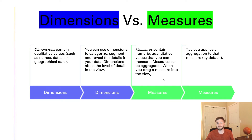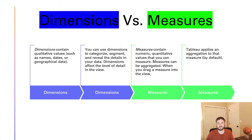Measures, on the other hand, can be added up. They're numeric, quantitative. When you add them to a view in Tableau, they're aggregated. Let's go over to Tableau and see some examples.